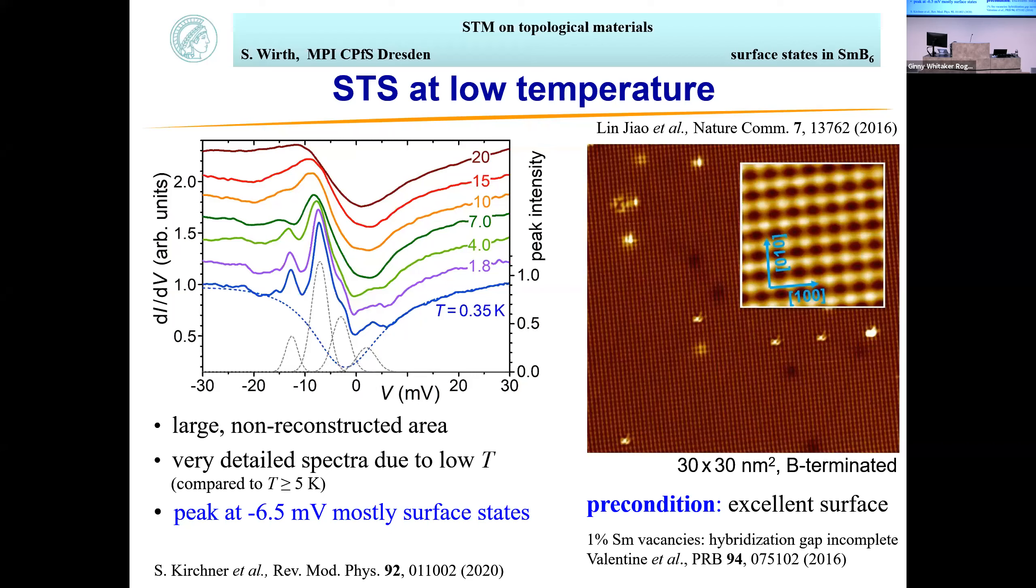We wanted to do tunneling spectroscopy, looking for clean areas. There was already the notion that the hybridization gap would be incomplete with some vacancies, but if you stay away from defects you get nice spectra. You see how the hybridization gap evolves as you go down to 35 millikelvin. You see additional peaks, and I want to concentrate on the one at minus 6.5 millielectron volts, which carries significant surface state contribution. The position and energies are in line with Peter Wirth's group results using floating zone grown samples.